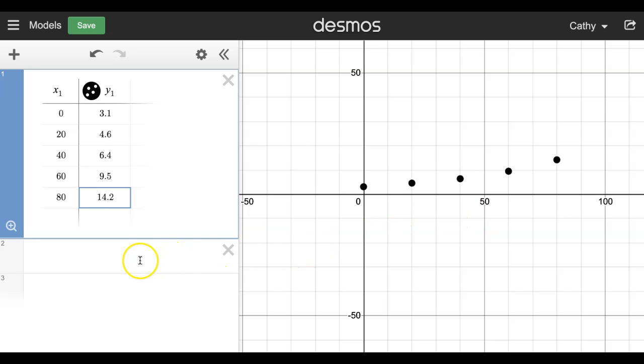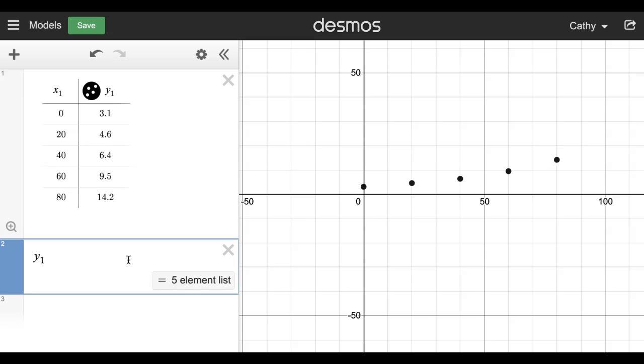So I could ask Desmos to give me the linear model for this by typing y1, then I use the tilde key which is shift and it's the upper left key on my keyboard. So tilde mx1 plus b.